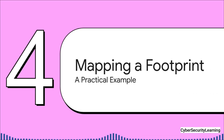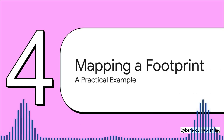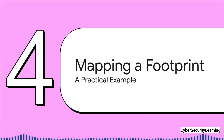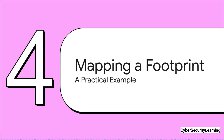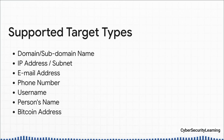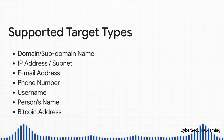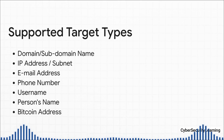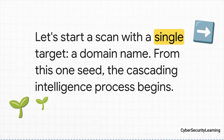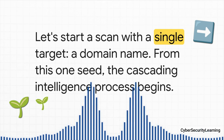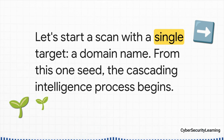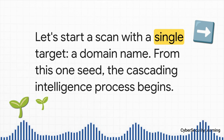So what does this chain reaction actually look like? Let's run through a quick hypothetical scan to see how one tiny thread can unravel a whole digital tapestry. You can kick off a scan with almost anything: a domain name, an IP address, an email, a simple username — you can even start with a Bitcoin address. Each one is a potential starting point for the investigation. For our example, we're going to give SpiderFoot just one thing to work with: a domain name. That's it. Let's see what happens.